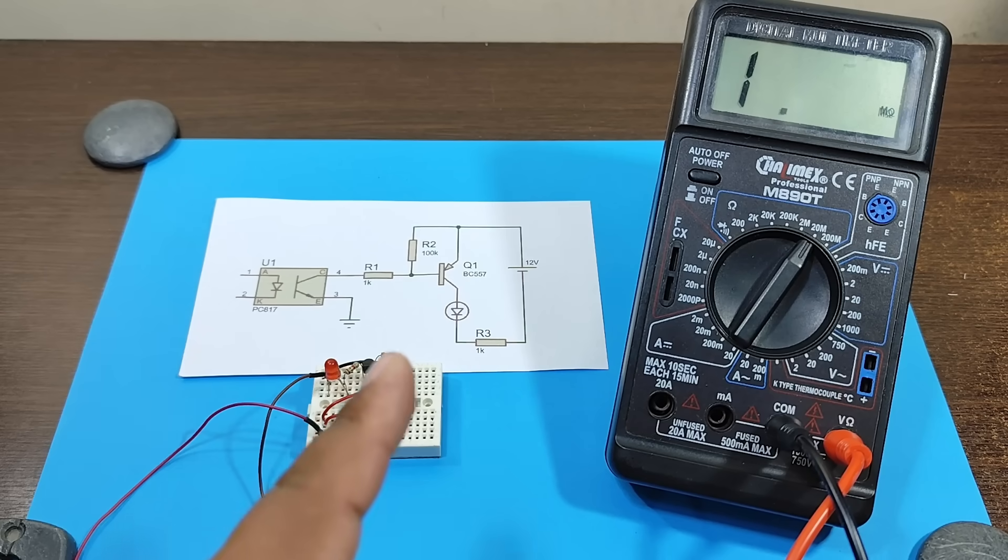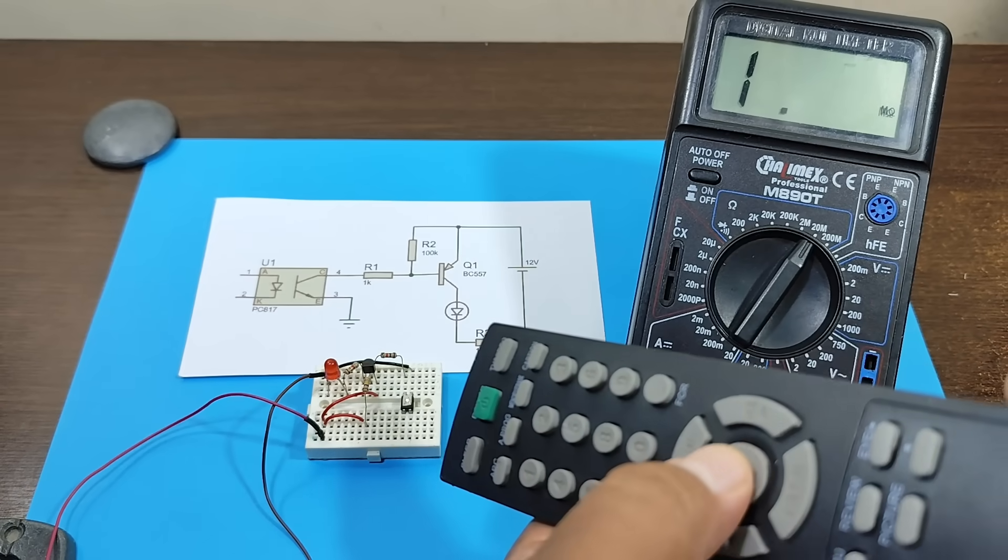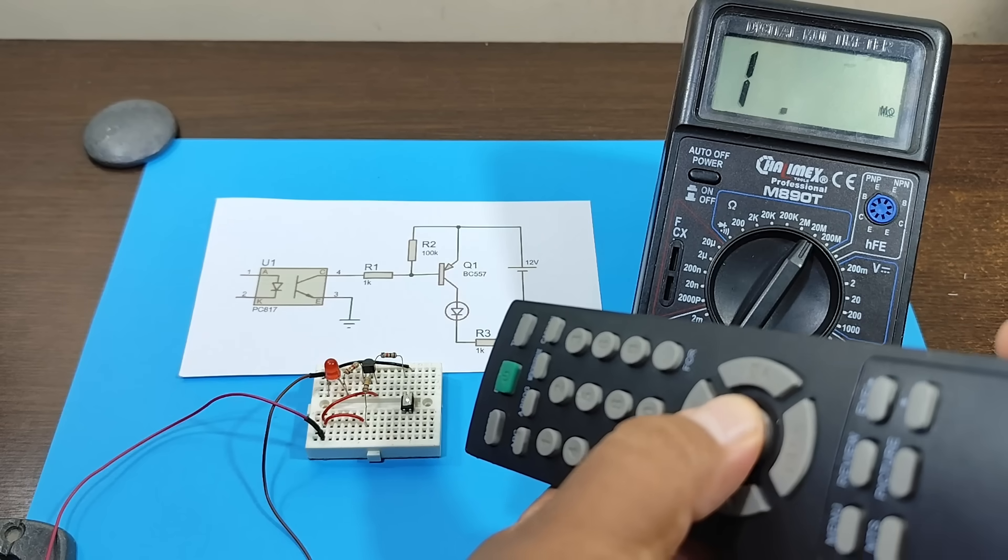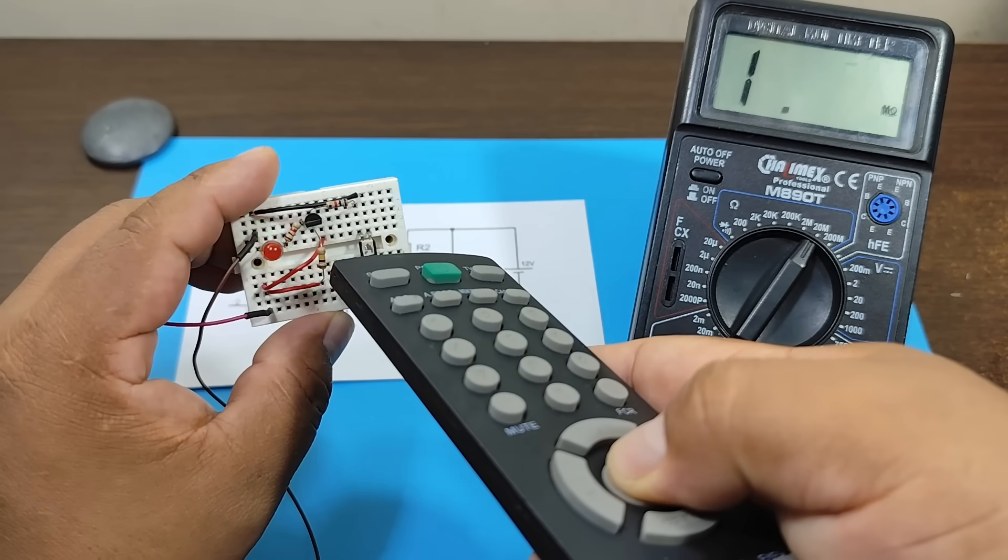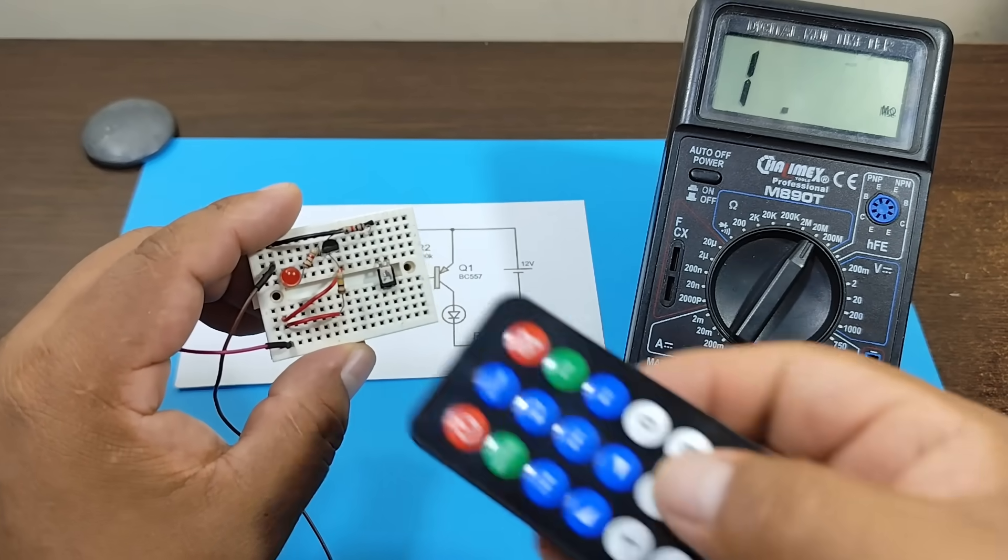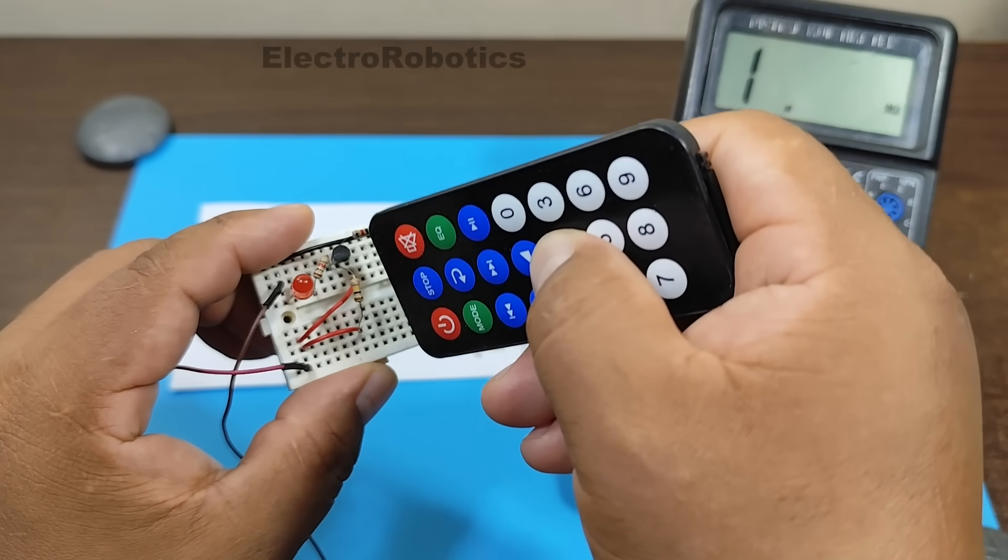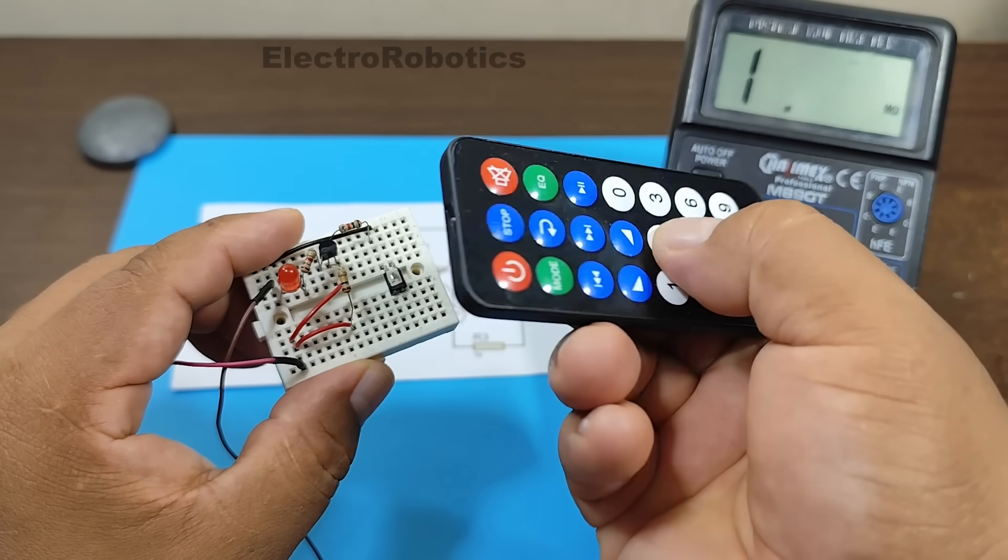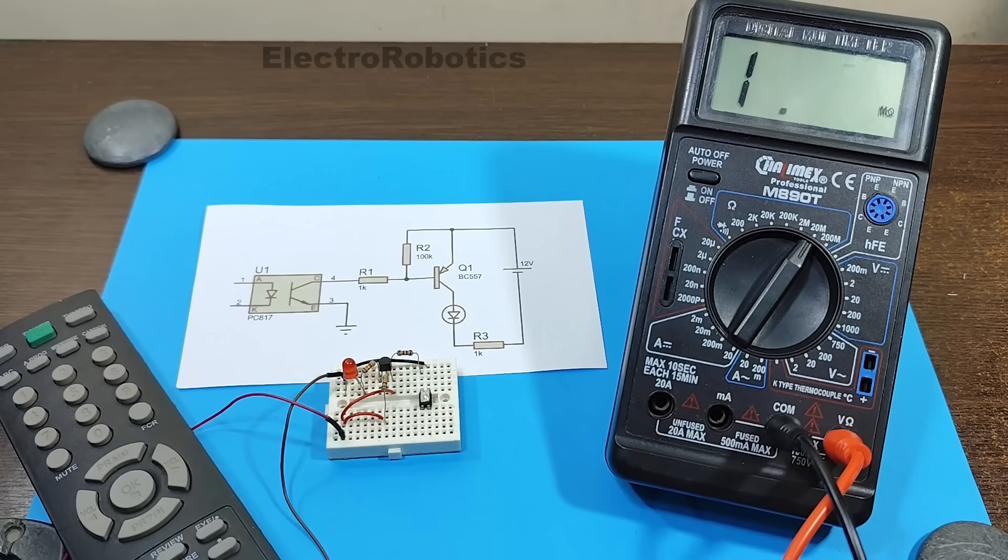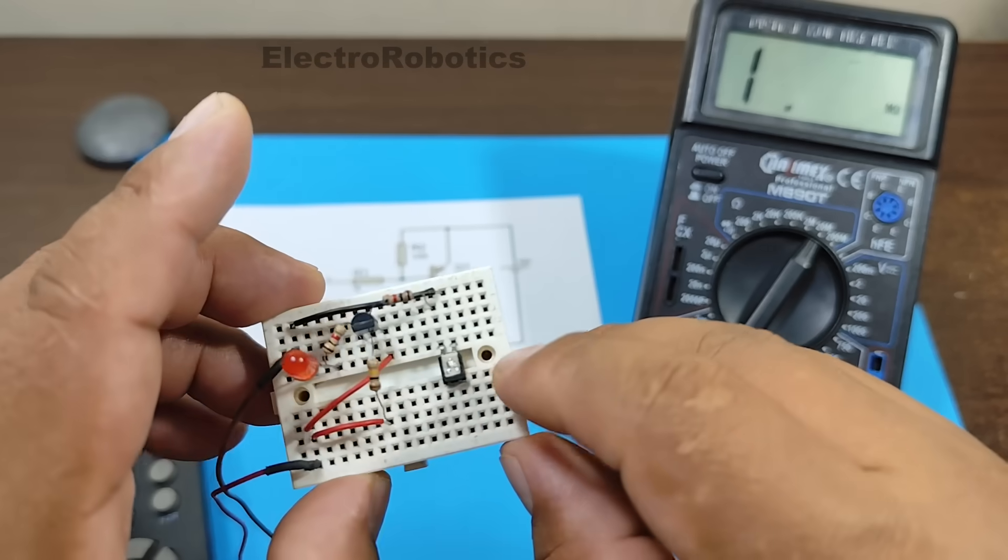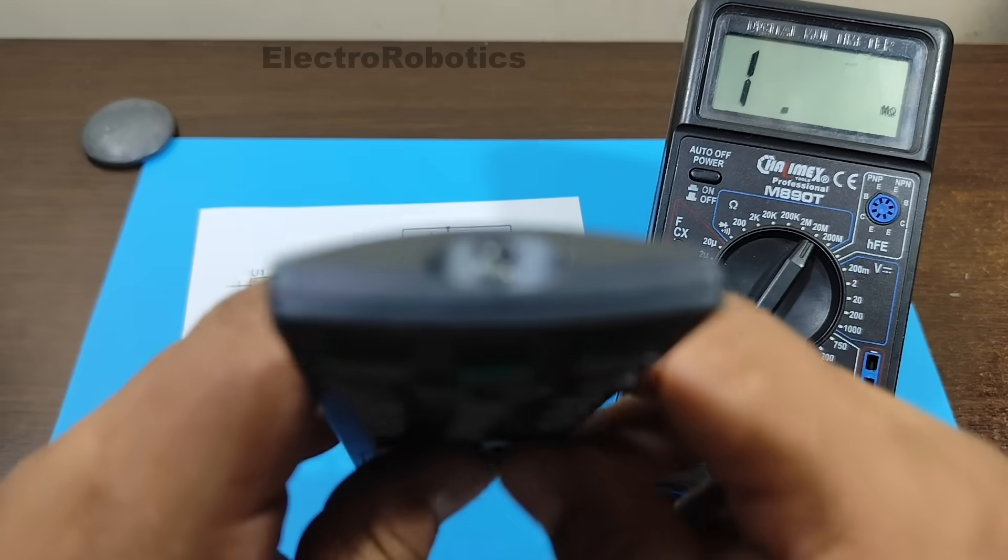Alright, let's power our circuit with 12 volts. Now let's see if it works with our remote control. As you can see, it works. And you can use other types of remote controls in the same way. Well, some will work better than others. Alright, in this way we confirm that the optotransistor works depending on the light that falls on it, and that it works much better with the infrared light emitted by remote controls.